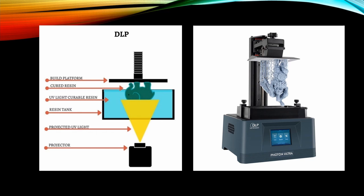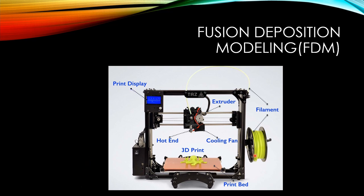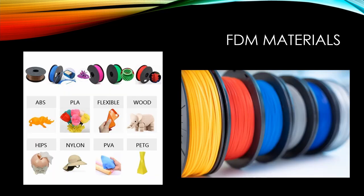Now let's talk about FDM printers. We have a spool of filament and a bed to print on. The filament is fed through the extruder, and the hotend melts it and deposits the material onto the bed. Similar to resin printers, multiple FDM materials can be used. The most well-known is PLA, which is biocompatible and biodegradable — polylactic acid. We also have ABS, flexible materials, PETG, and materials that even look like wood.